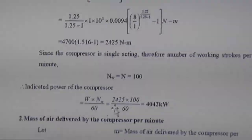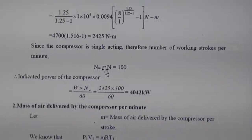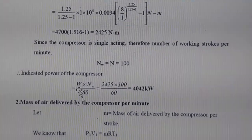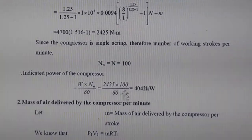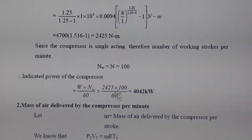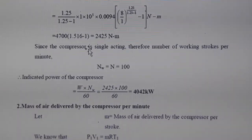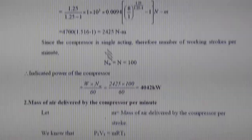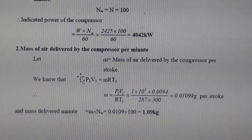Speed of the compressor is given, so we can find indicated power in kilowatts: Power = 2425 × (100/60), converting from N·m using the speed of 100 rpm.